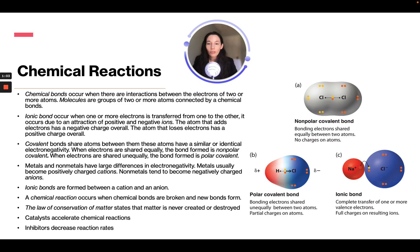Metals and nonmetals have large differences in electronegativity. Metals usually become positively charged cations, where nonmetals tend to become negatively charged anions. Ionic bonds are formed between a cation and an anion. A chemical reaction occurs when chemical bonds are broken down and new bonds form. The law of conservation of mass states that matter is never created or destroyed. Catalysts accelerate chemical reactions and inhibitors decrease reaction rates.